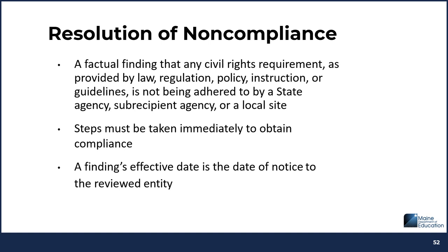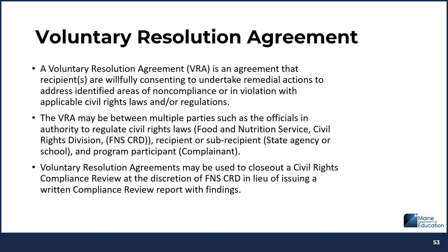Resolution of non-compliance involves a factual finding that any civil rights requirement, as provided by law, regulation, policy, instruction, or guidelines, is not being adhered to by a state agency, subrecipient, or local site. Steps must be taken to obtain compliance. A finding's effective date is the date of notice to the reviewed entity. In some cases, voluntary resolution agreements, or VRAs, may be used. A VRA is an agreement that recipients are willingly consenting to undertake remedial actions to address identified areas of non-compliance. The VRA may be between multiple parties, including FNS Civil Rights Division, the recipient or subrecipient, the state agency or sponsor, and program participants including the complainants.